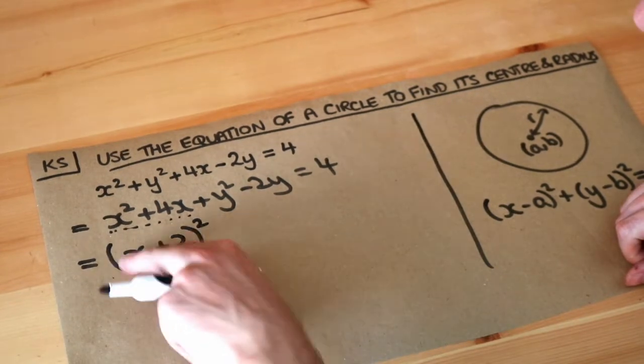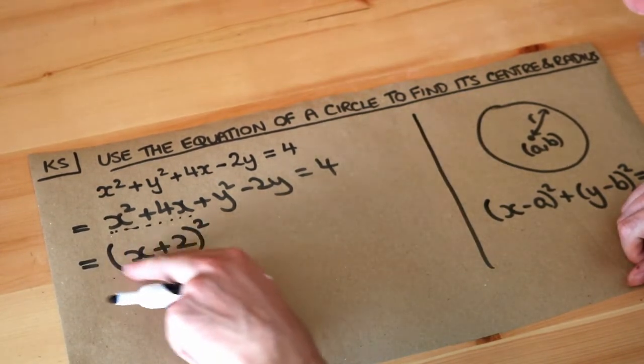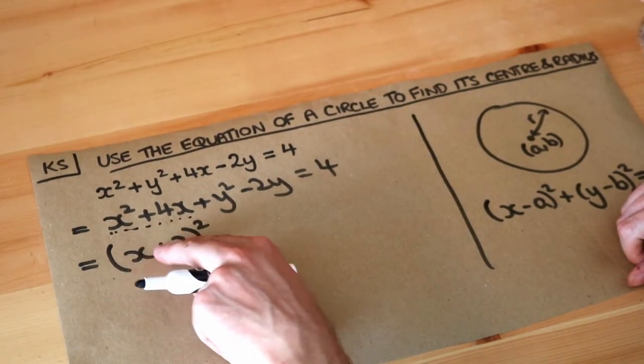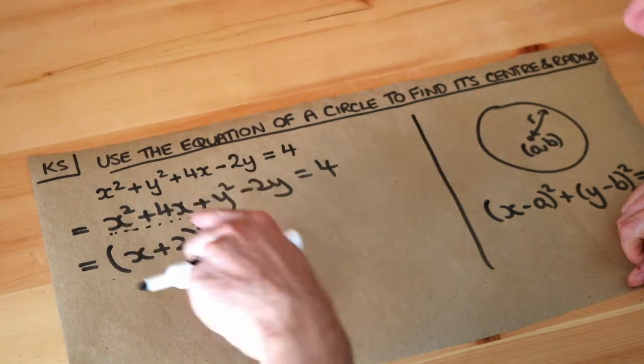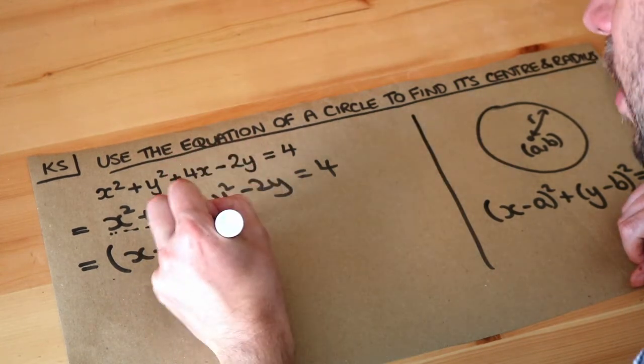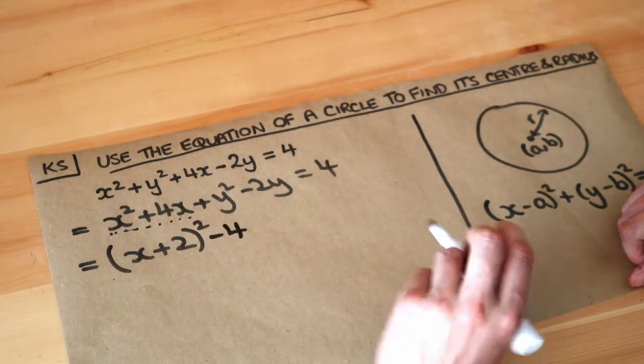And then, well if you were to expand that, x plus 2 all squared would give you x squared plus 4x plus 4. We don't want the plus 4 because there's no plus 4 here, so we're going to throw it away. That's how we complete the square.